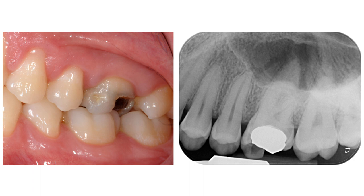The diagnosis of reversible pulpitis was made and the patient was informed that an indirect restoration was necessary. At the same time, he was informed that the decision to maintain pulp vitality or accomplish a pulpectomy could only be taken after removal of the restorative materials and carious tissue.